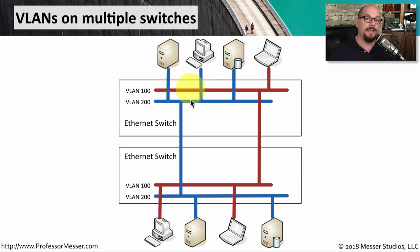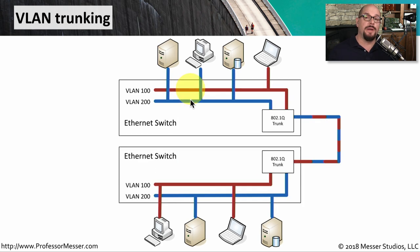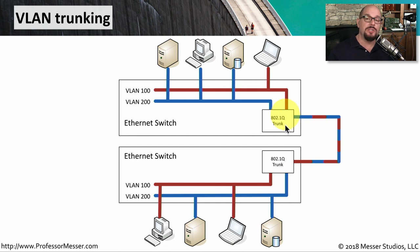You wouldn't even have enough interfaces on the switch to connect all of those VLANs to each other. Instead, you would create what's called a trunk. This trunk connection is a single physical connection between those two switches, but it's able to transmit multiple VLANs across that trunk.